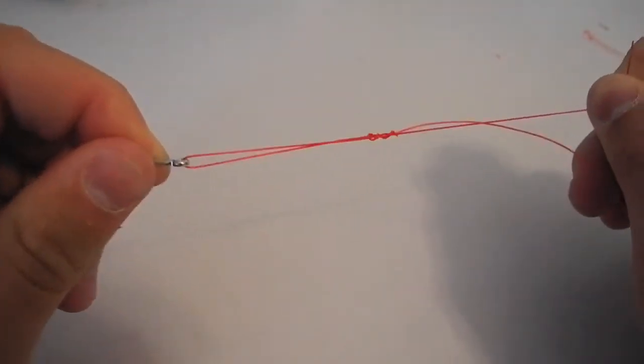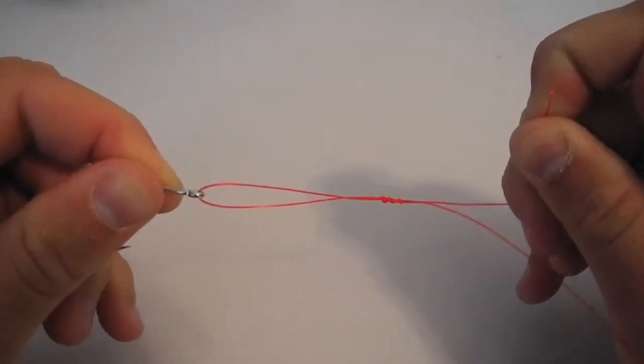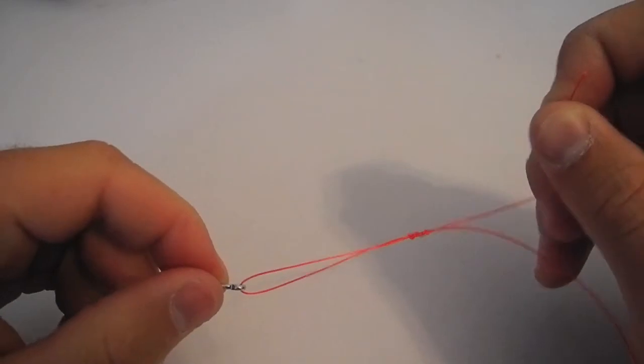Then what you can do is just pull on the tag end. What that's going to do is snug those wraps down around the standing line.